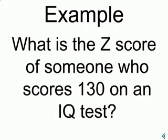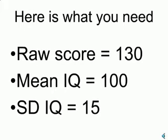Here's an example. What is the z-score of someone who scores 130 on an IQ test? 130 would be the raw score. IQ tests have a mean of 100 — that's the average IQ — and a standard deviation of 15.